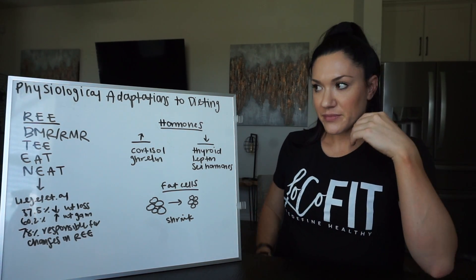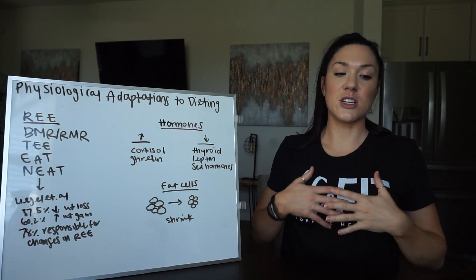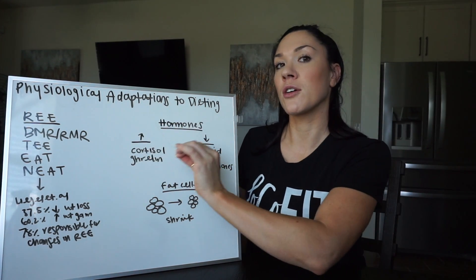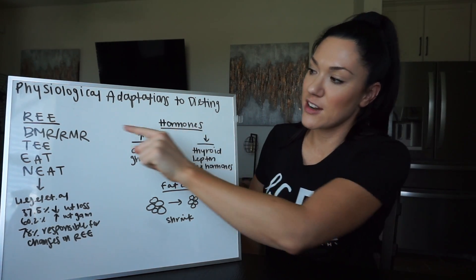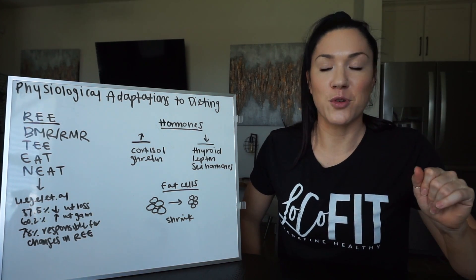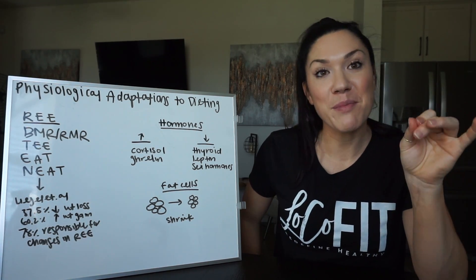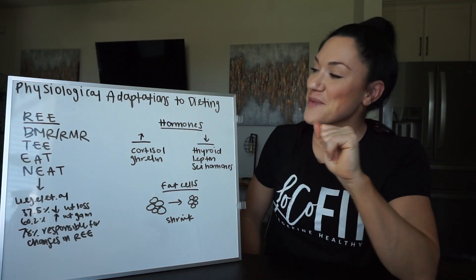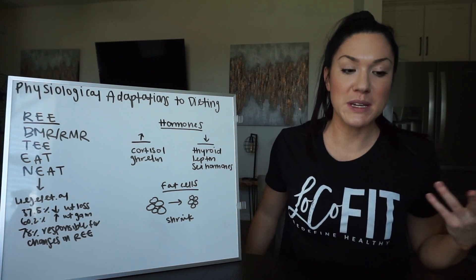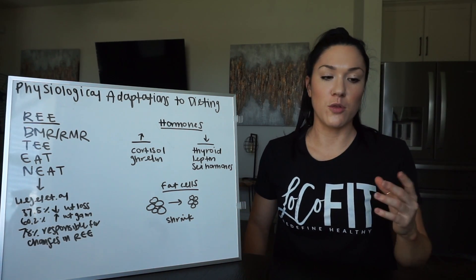I want to cover some of the heavy hitters for the physiological changes that occur with dieting. First, I want to talk about REE, which is resting energy expenditure — basically your metabolism as a whole. If we are looking at just your REE, we will see a decrease. But when we break apart each individual part, we will see that some parts are more affected than others. If you just look at REE without looking at its constituents, you will see a small overall reduction.